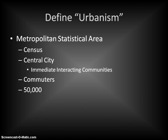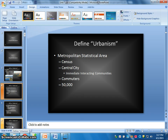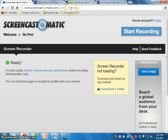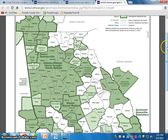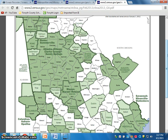In the United States, given the highway systems and how independent we are in transportation, this idea of commuting is going to be really important. It causes the influence of our cities to spread over much wider geographic areas. Urban areas by this MSA definition consist of an urban center — a city center — that has at least 50,000 people. I pulled up a couple of maps dealing with MSAs, Metropolitan Statistical Areas, so we can see exactly what we're talking about.